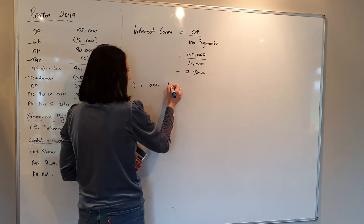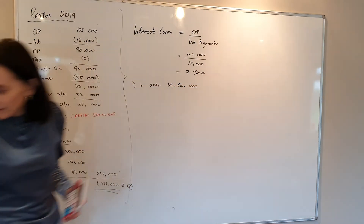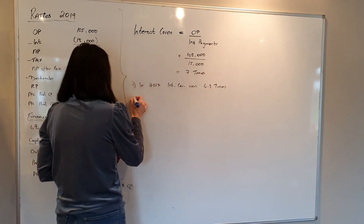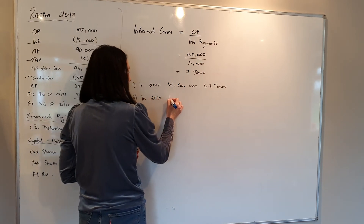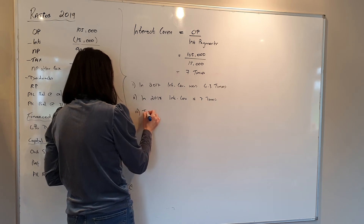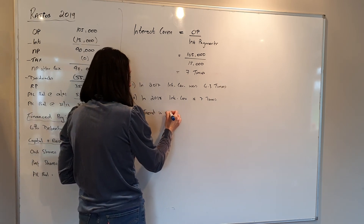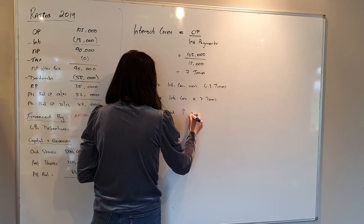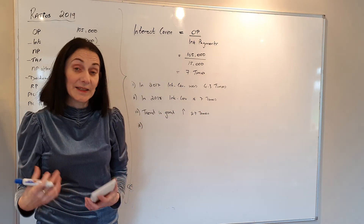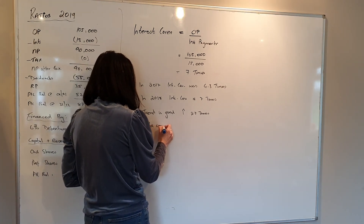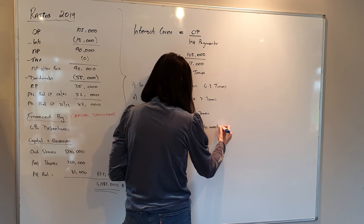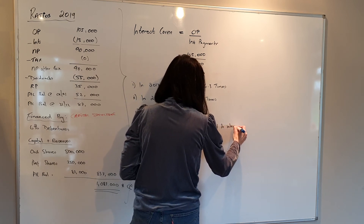Comments for interest cover: step one — in 2017, interest cover was 4.3 times. Step two — in 2018, interest cover is 7 times. Step three — always comment on the trend: the trend is good, with an increase of 2.7 times. This means the company will be able to meet its interest repayments.